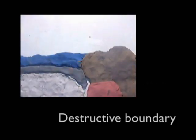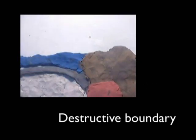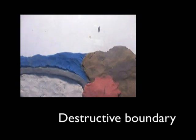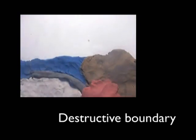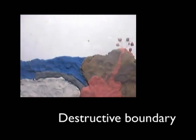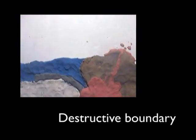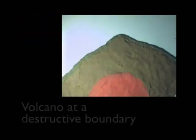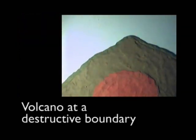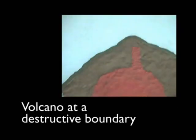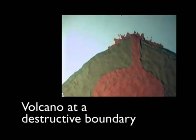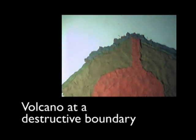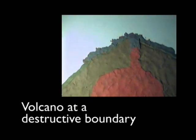Some volcanoes can be found on destructive plate boundaries. This is where one tectonic plate is dragged underneath another tectonic plate, begins to melt and forms a pool of magma. As this pool of magma grows, it heats up and pressure increases. As a result of this, the magma will move towards the surface and will eventually erupt onto the surface and form a volcano.